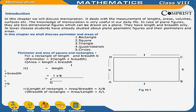Diagonal is equal to under root of (length squared plus breadth squared), that is under root of (L square plus B square). Length of rectangle is equal to area upon breadth, which is equal to A upon B. Breadth of rectangle is equal to area upon length, which is equal to A upon L.